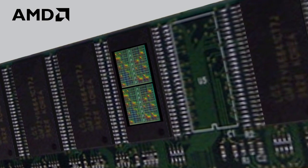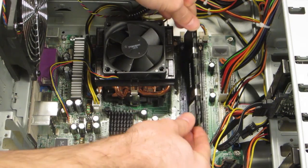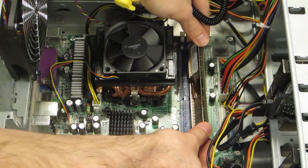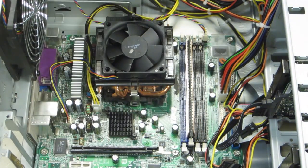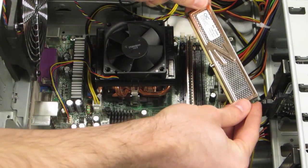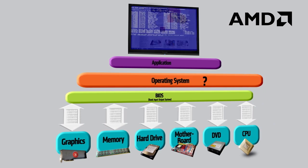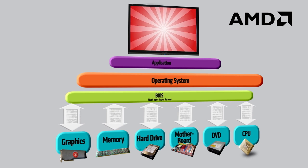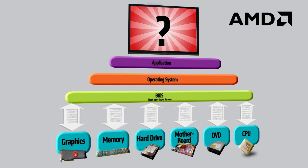3D corruption can also occur if the main system memory is defective or mismatched. Try replacing the system memory module with another known good module of the same specification to see if the problem rectifies itself. If the BIOS is not configured correctly, 3D corruption can also result. Please watch AMD's BIOS video for more information — the link is on screen — to understand how to rectify any BIOS-related corruption symptoms.